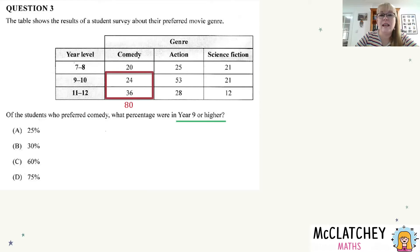Our next step is to focus on year nine or higher. We're only really interested in the year 9-10 box and the year 11-12 box, so we need to add those two together and work out what that percentage is out of 80. So we add those together and we multiply by 100 to turn it into a percentage.